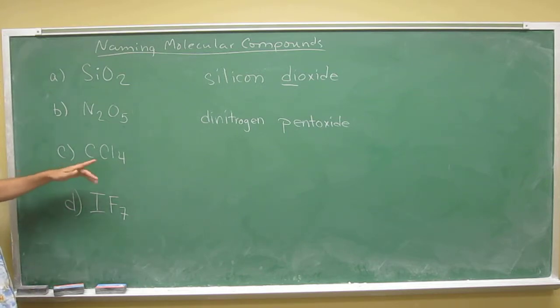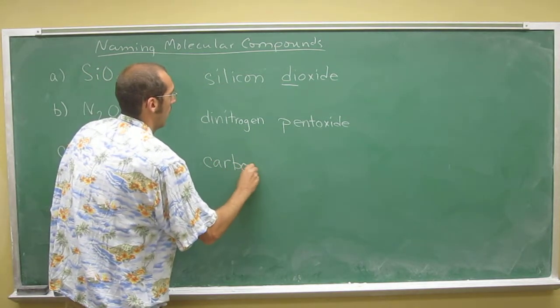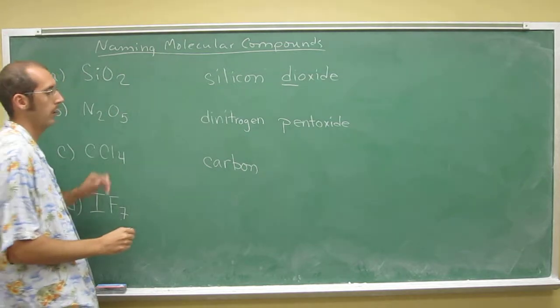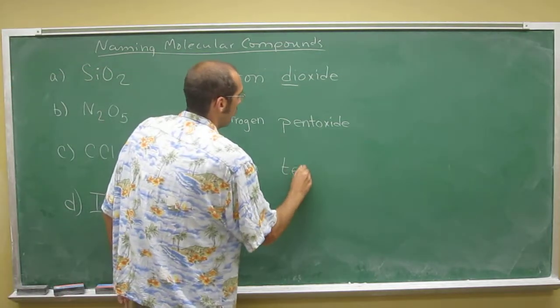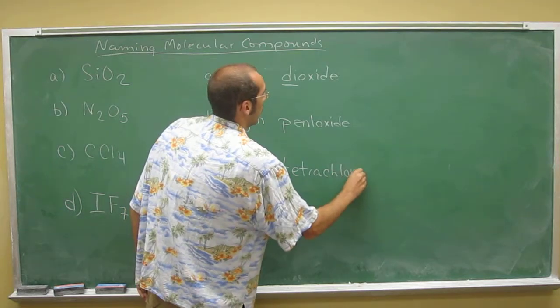So carbon, right, because there's not more than one, it's just carbon. But there's four chlorines, so it's carbon tetrachloride.